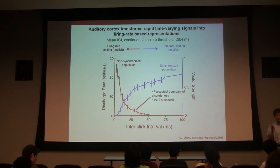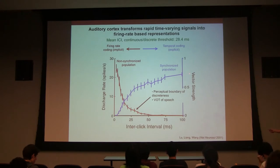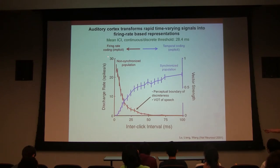This number appears to be roughly between 25 and 30 milliseconds, independent of culture and language. In fact, it seems to be independent of species, since mammals and monkeys we tested show about the same result. This is a very fundamental property. In terms of coding, synchronized responses are called explicit coding — you can see exactly what the stimulus is — while the firing rate-based coding is implicit, because you have interpreted the signal.